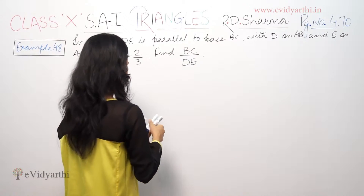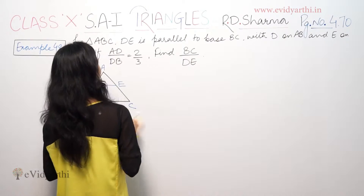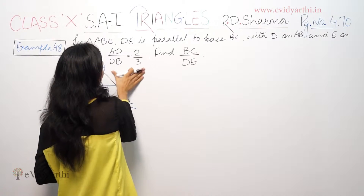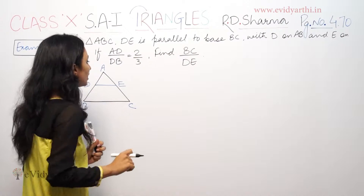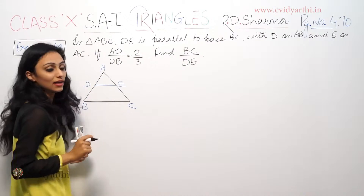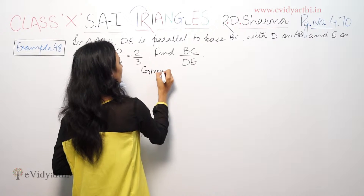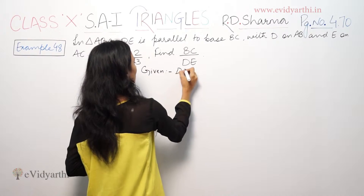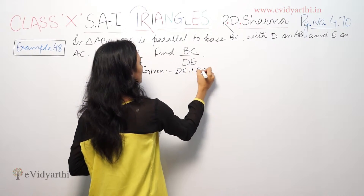So first of all, what is given? We have given that DE is parallel to BC.